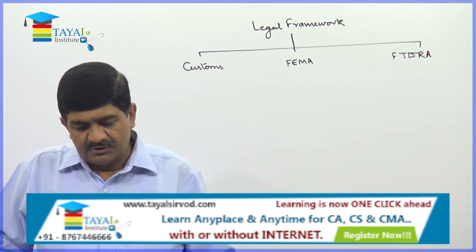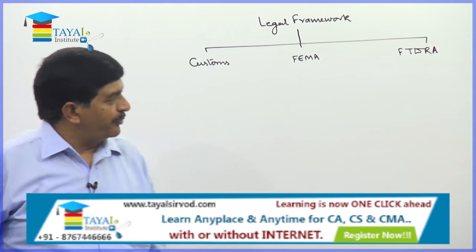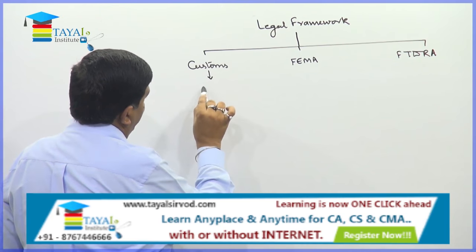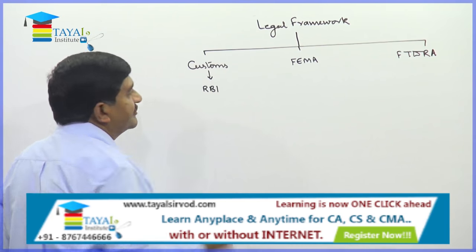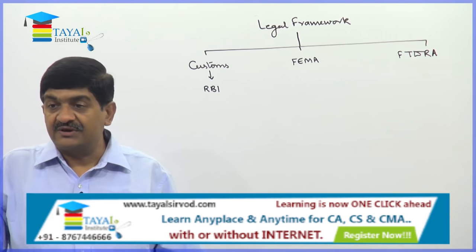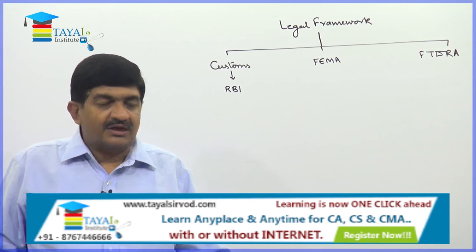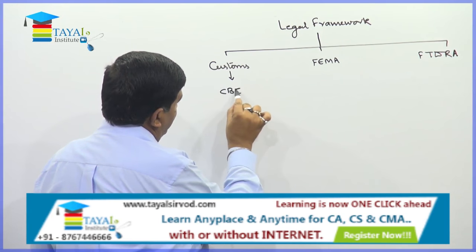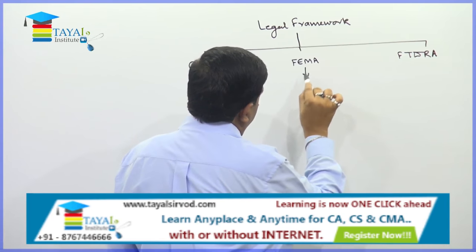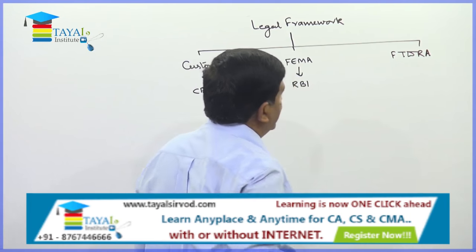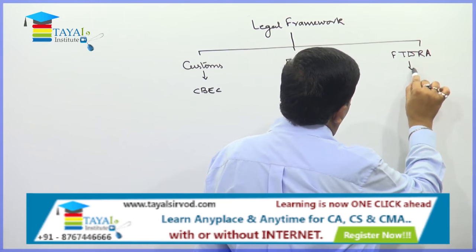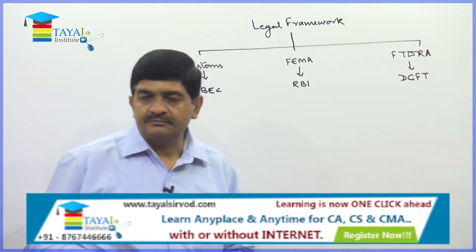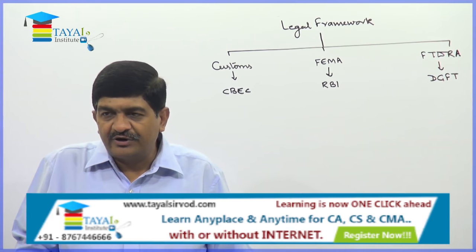Three acts combined together are related to import and export. As far as Customs is concerned, the main authority is CBIC. In FEMA, the main authority is RBI, and in the Foreign Trade Development and Regulation Act, the main authority is DGFT — Director General of Foreign Trade.